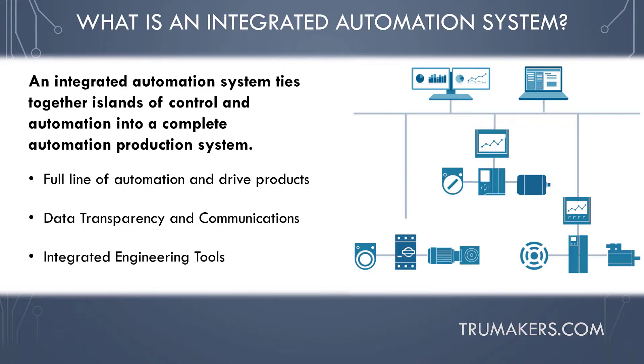An integrated automation system ties together islands of control into a complete production system. This may include a full line of automation and drive products such as control, networking, visualization, motion, and safety.